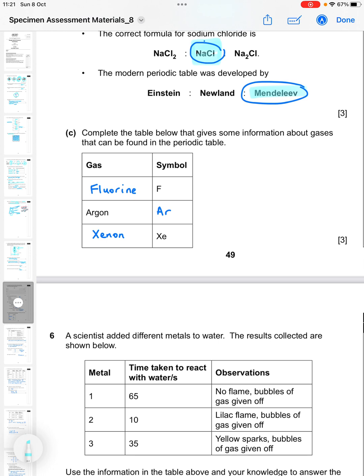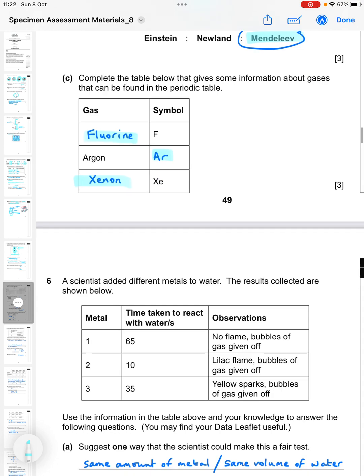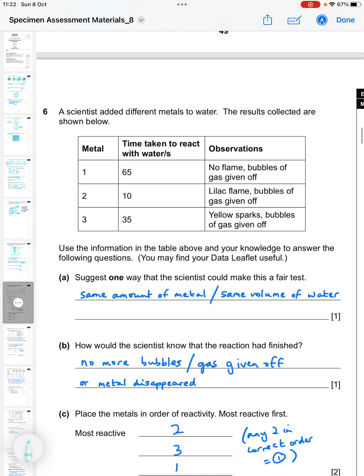Complete the table that gives some information about gases that can be found in the periodic table. Again you can use your data leaflet for this, so you don't need to know them off the top of your head. The symbol F is for fluorine, argon has the symbol Ar, and Xe is xenon. You look those up - you shouldn't have to learn anything like that from the periodic table because you're always given it.